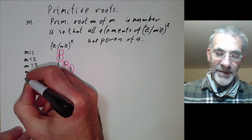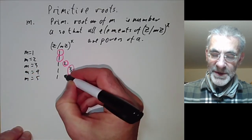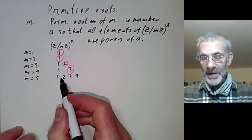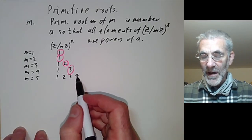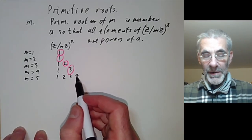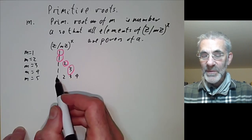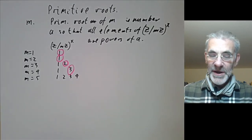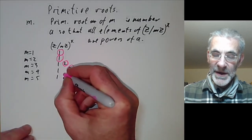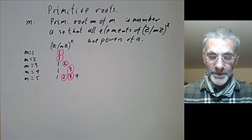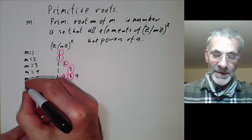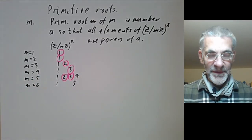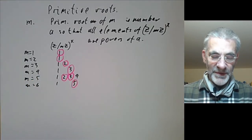For m equals 5 we have to think a bit because there are now four elements. 4 is not a primitive root because its square is 1, so the powers of 4 are just 4 and 1. But you can easily check that 2 and 3 are primitive roots. For m equals 6 nothing much happens: there are two elements, 1 and 5, and 5 is the primitive root.